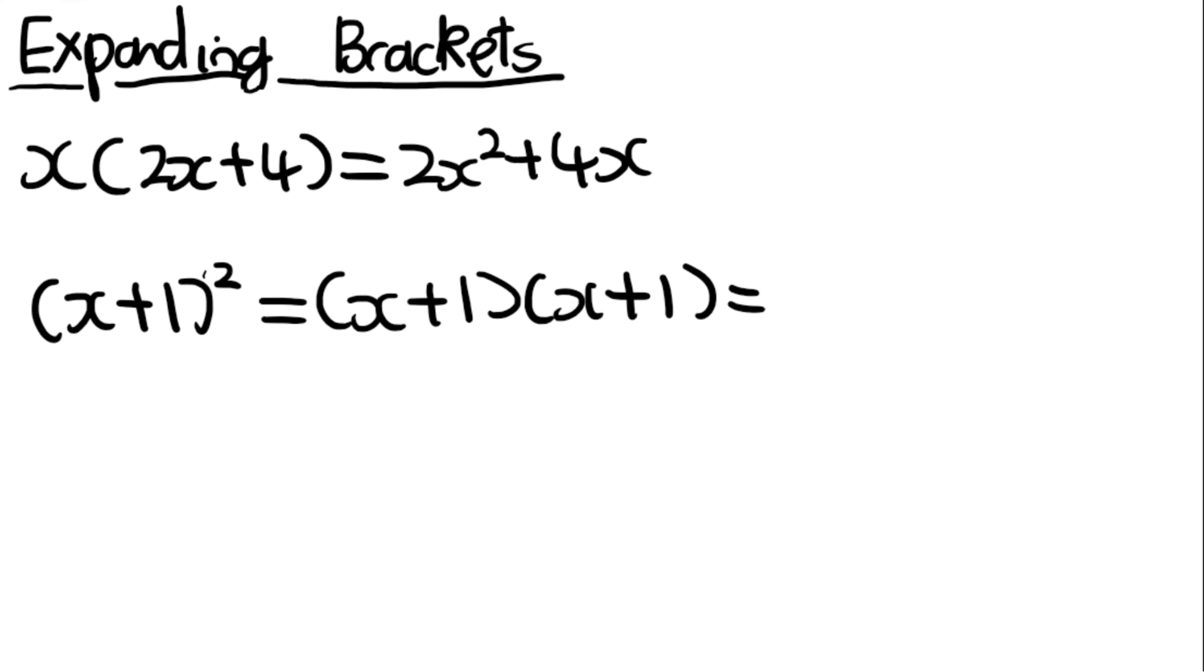So in this instance, it would be x times x, which is x squared, 1 times x, which is x, 1 times x, which is x, and 1 times 1, which is 1. And then these two terms you can simplify because they're like terms, x squared plus 2x plus 1.